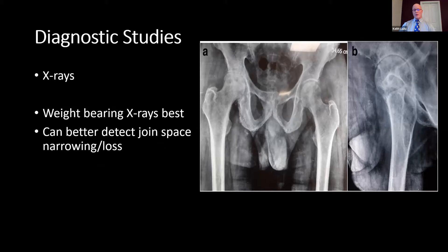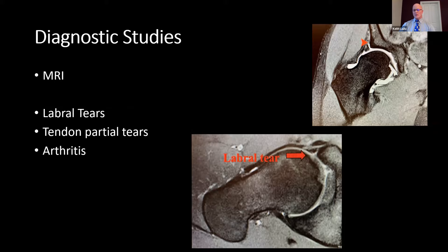As far as diagnostic studies, weight-bearing X-rays are best and you can best detect joint space narrowing, especially with hip X-rays. You can see in the diagram that picture A shows almost complete loss of joint space, where the joint space is still somewhat maintained on the other side. MRIs help detect labral tears and can also show partial tendon tears as well as arthritis. Some patients who have non-weight-bearing X-rays may show the hip looking somewhat normal, without that joint space narrowing, but then an MRI shows advanced arthritis.